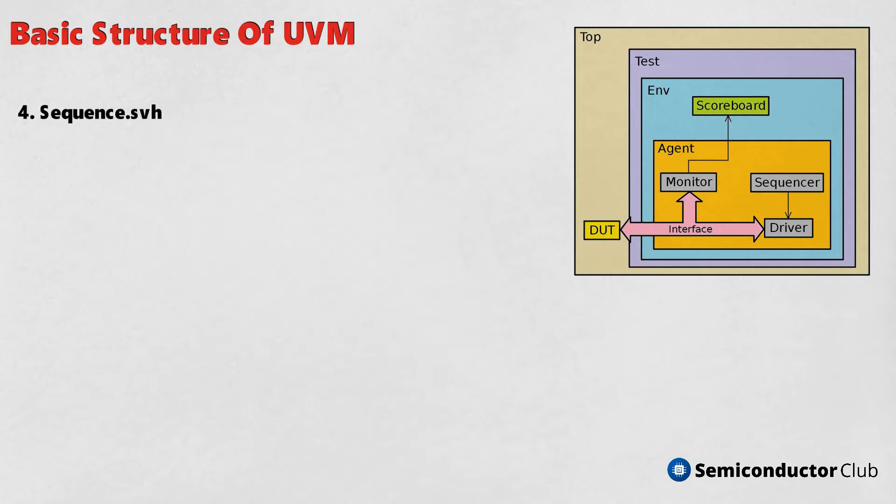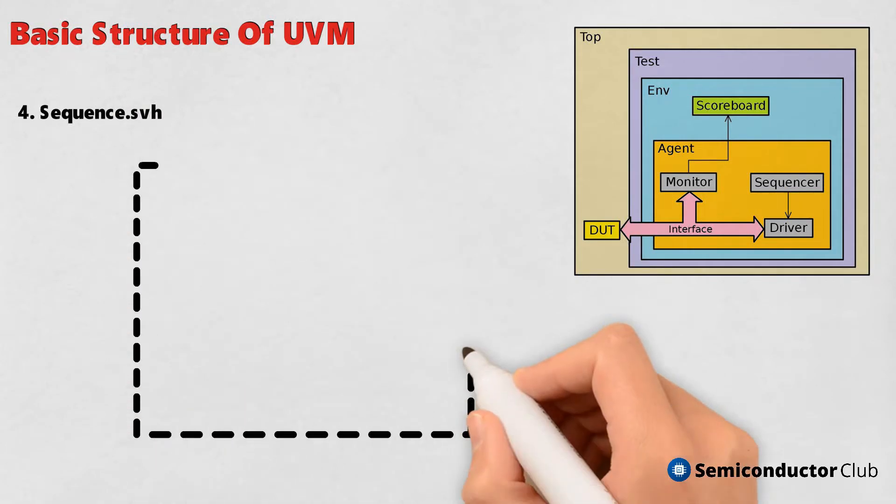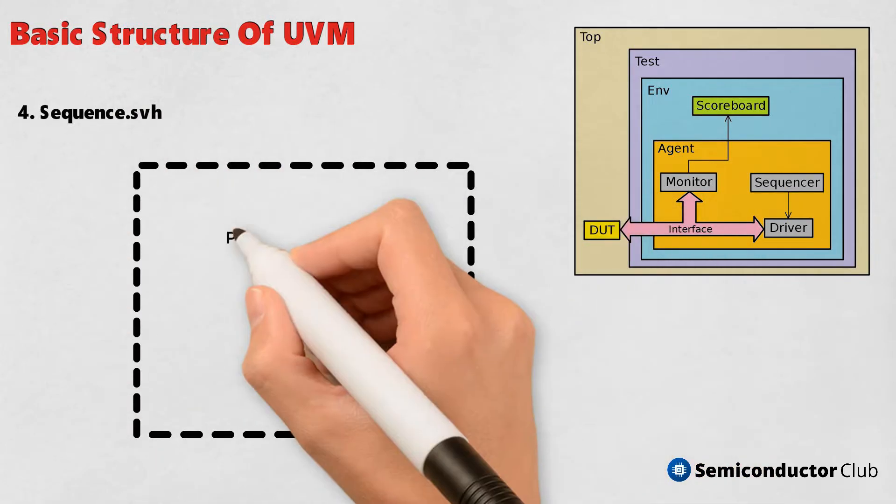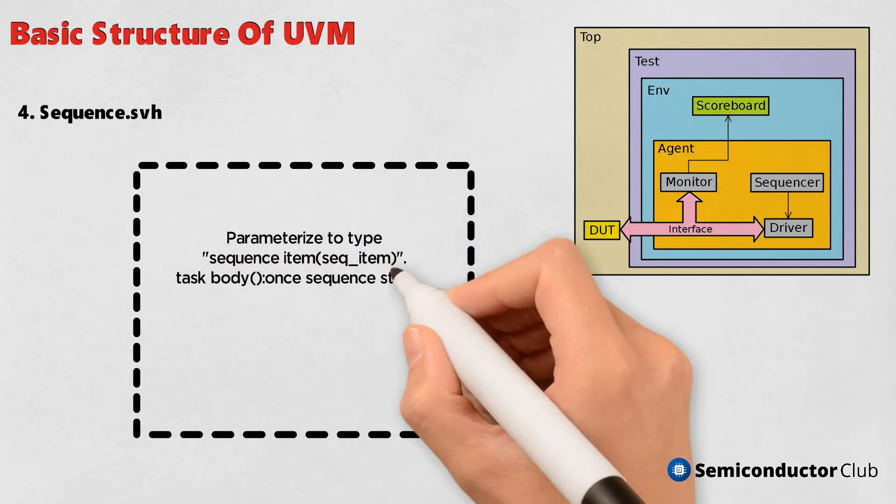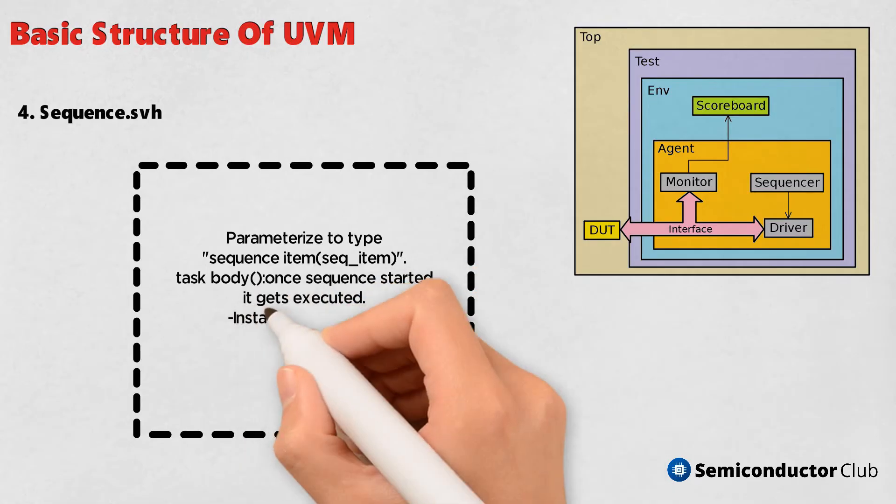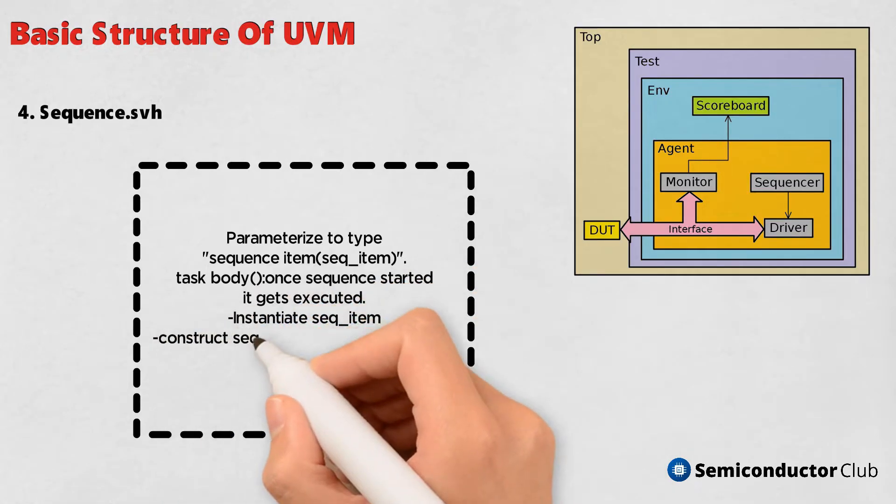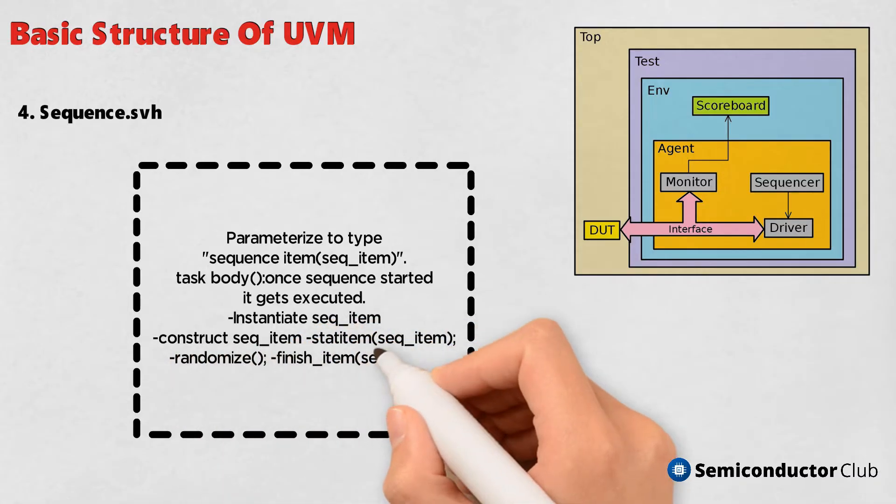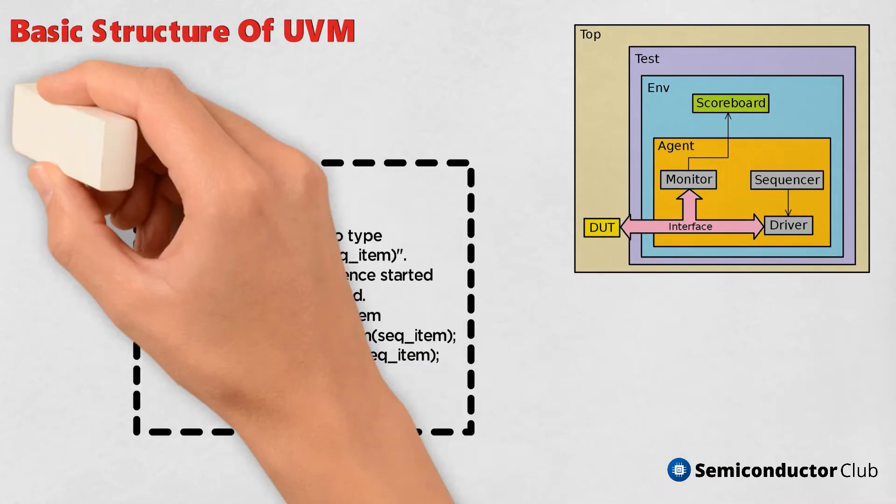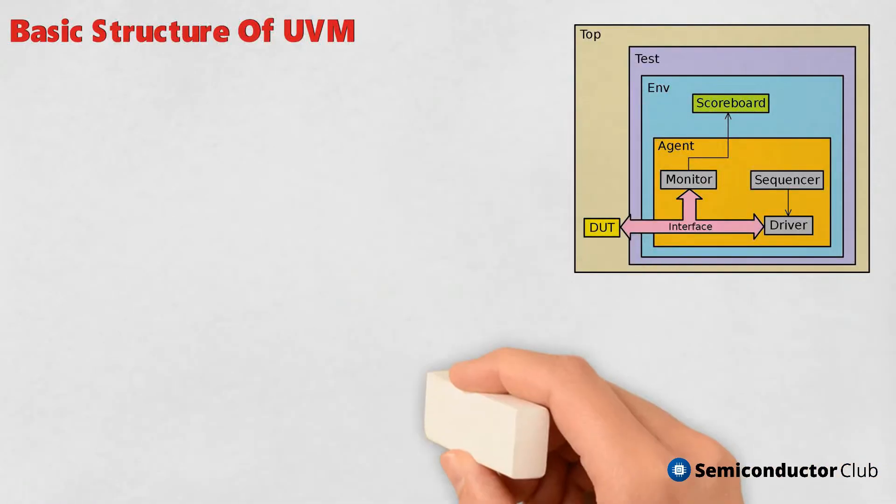4. Sequence.svh - Parameterize to type sequence_item (seq_item). Task body: once sequence started it gets executed. Instantiate seq_item, construct seq_item, start_item seq_item, randomize, finish_item seq_item.